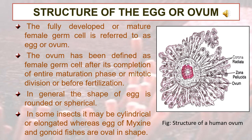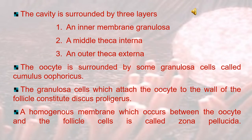This is the figure of the structure of an ovum. The cavity is surrounded by three layers: an inner membrane granulosa, a middle theca interna, and an outer theca externa. The oocyte is surrounded by some granulosa cells called cumulus oophorus. The granulosa cells which attach the oocyte to the wall of the follicle constitute the discus proligerus. A homogenous membrane which occurs between the oocyte and the follicle cells is called the zona pellucida.